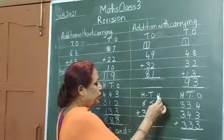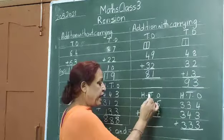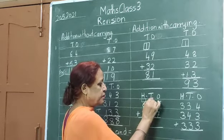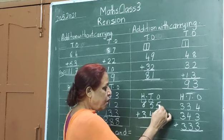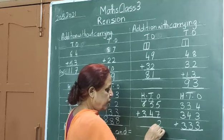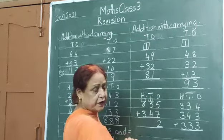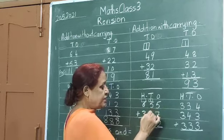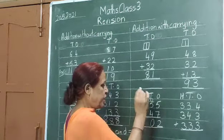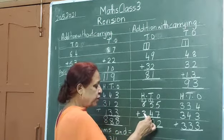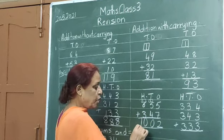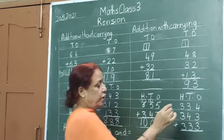Now sums in 3-digit numbers, we will carry. 1s side, 10s side and 100s side. We will make boxes here. Now 7 plus 7 is 14 — carry 1. 5 plus 4 is 9, and 1 is 10 — carry 1. 6 plus 3 is 9, and 1 is 10. Answer is 1002.